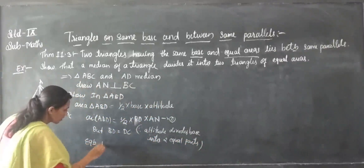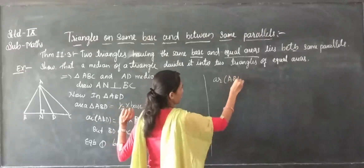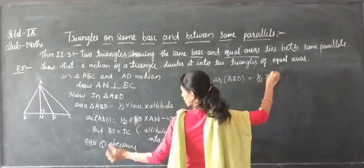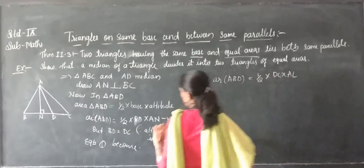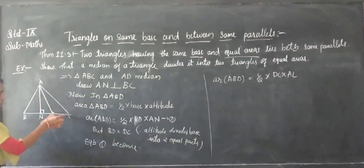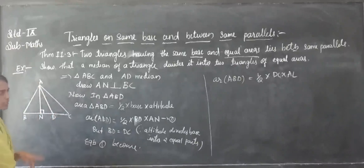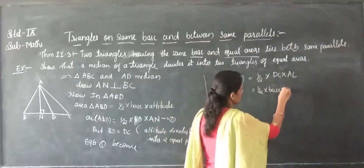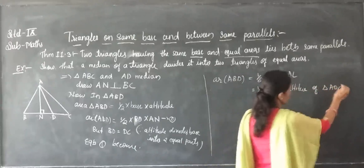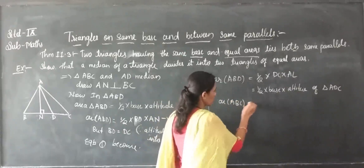So equation 1 becomes: area of triangle ABD equals half into BD into AN. Since BD equals DC, we can substitute. This is equal to half into base into altitude of the full triangle ABC. So area of triangle ABD equals area of triangle ACD — both equal half the area of triangle ABC.